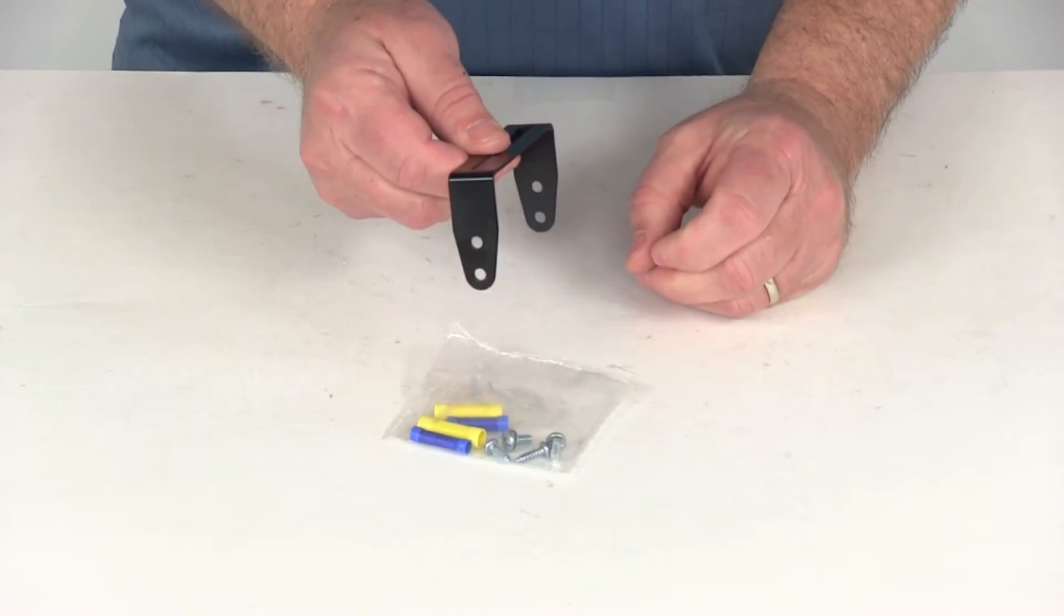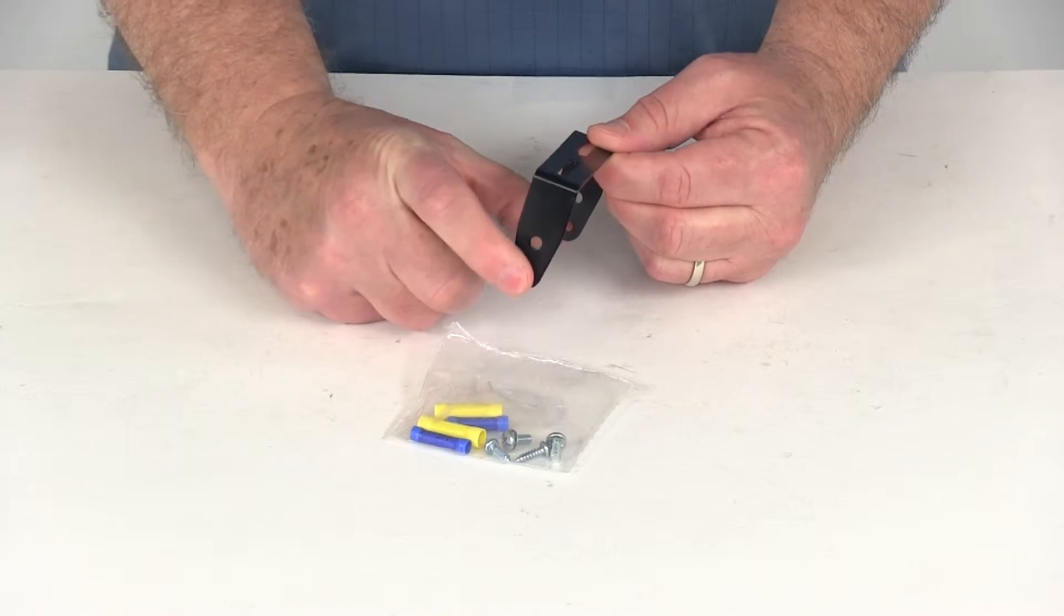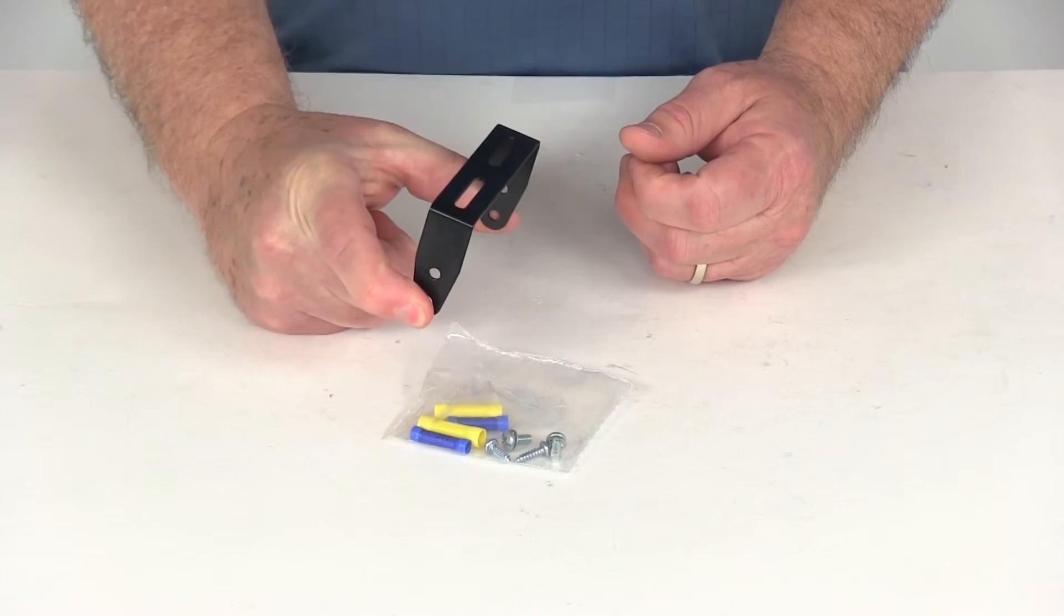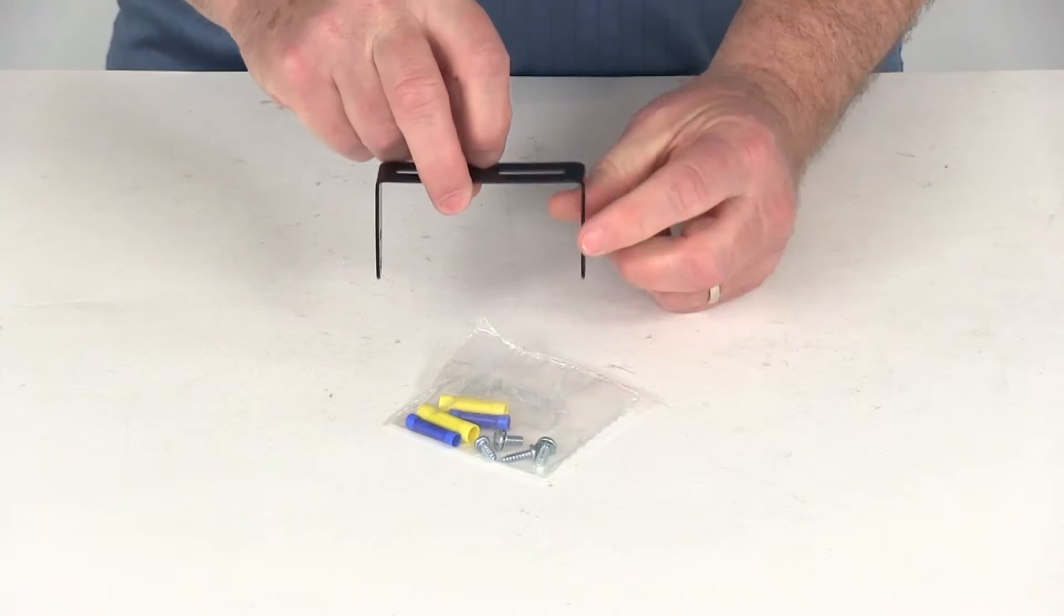Now this kit does include this metal bracket, does include the mounting screws. There's four of them: two for mounting the bracket to the brake controller itself, and then two for installing the mounting bracket onto your vehicle.